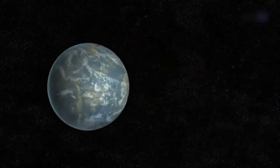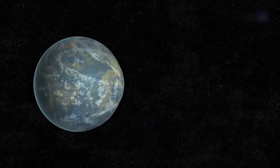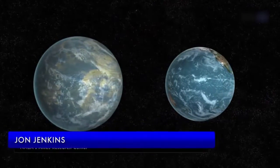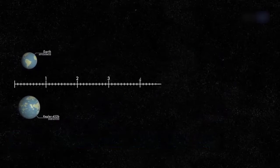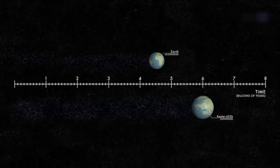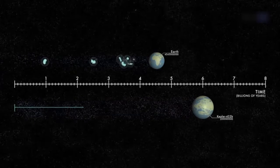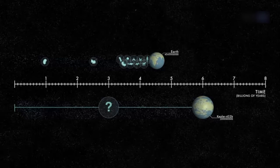We can think of Kepler-452b as an older, bigger cousin to Earth, says John Jenkins of NASA's Ames Research Center, who led the team that discovered Kepler-452b. It's awe-inspiring to consider that this planet has spent 6 billion years in the habitable zone of its star, longer than Earth. That's substantial opportunity for life to arise should all the necessary ingredients and conditions for life exist on this planet.